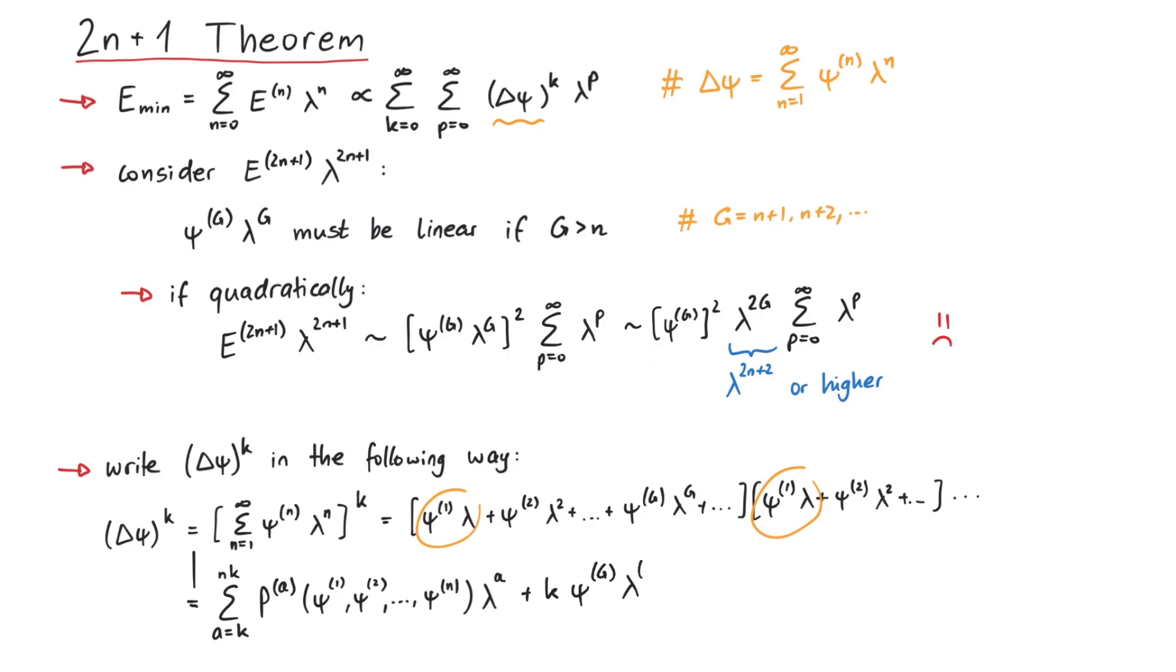Next, we have a term that is linear in psi_g. What remains are k minus 1 copies of delta psi. So, strictly speaking, in this second term, we have at least one copy of psi_g, because there could be others in delta psi, but this is good enough for our proof. Lastly, we have all the terms where psi_g appears twice or more often, but we are not interested in those, so let's denote them symbolically like this. This expression for delta psi to the power of k is the second and final thing we need for the proof.